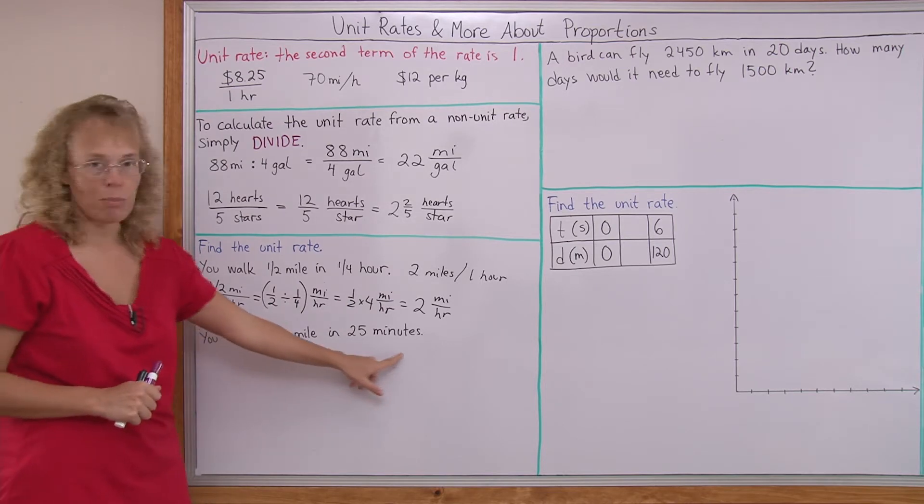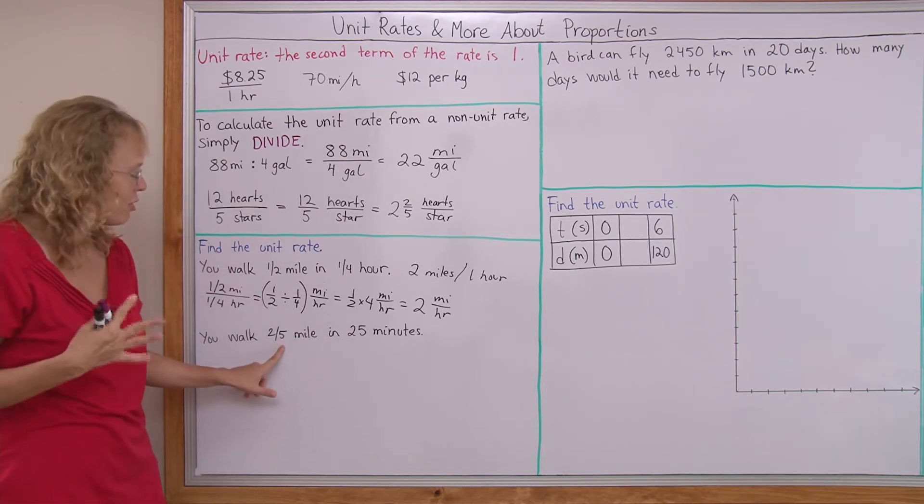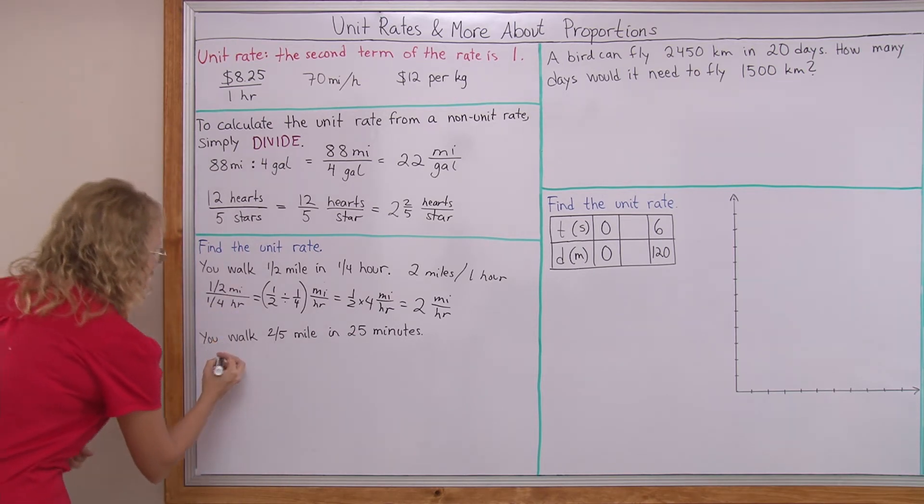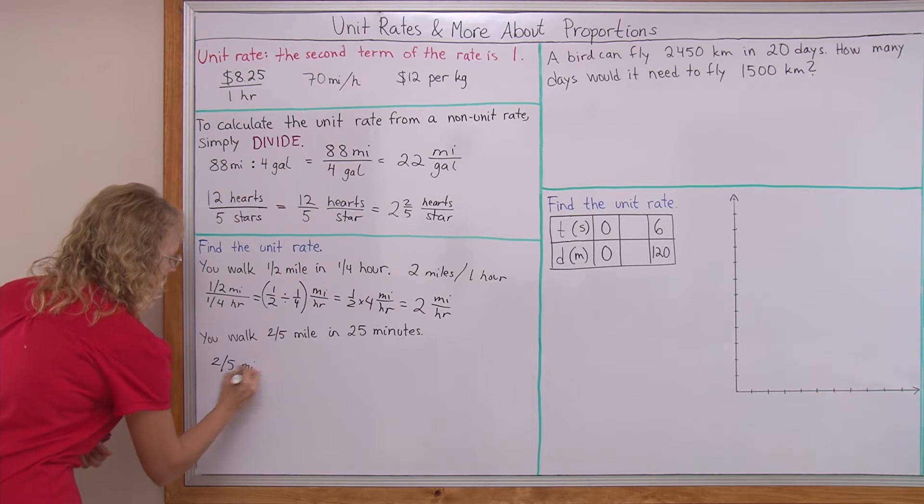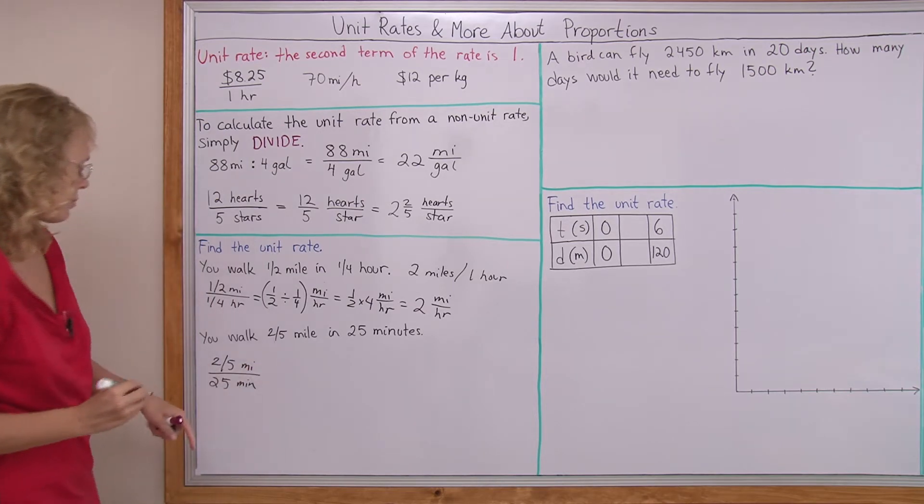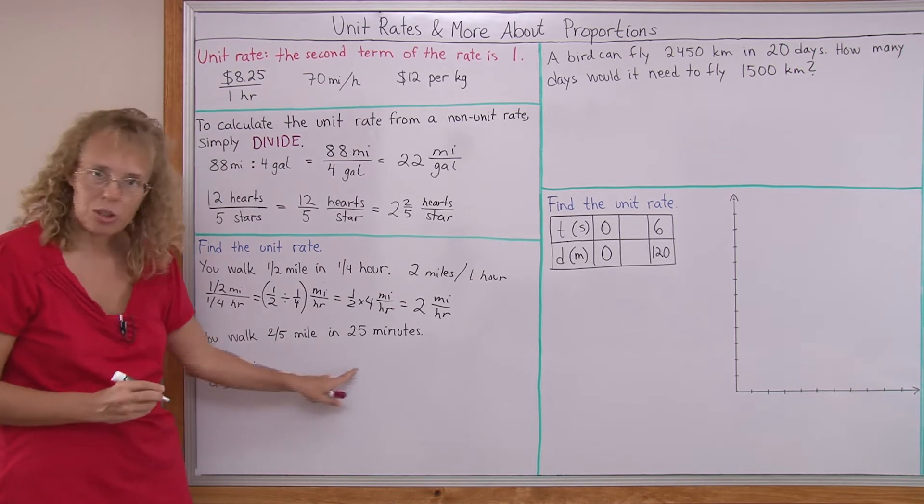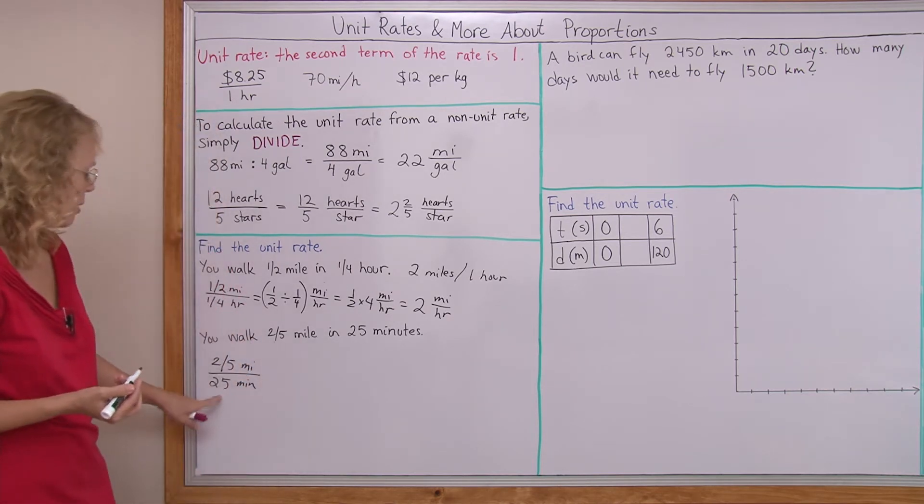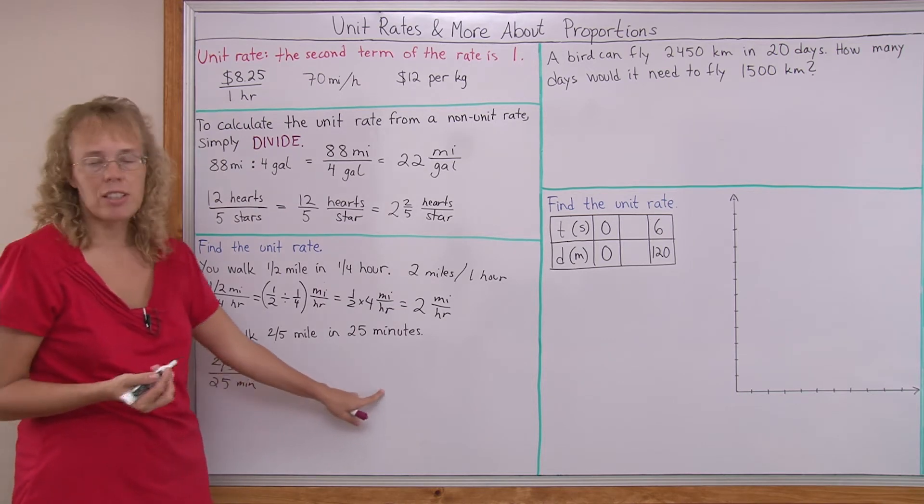Another one, we have a fractional part of an hour. You walk two-fifths of a mile in 25 minutes. Let me show you how to solve this one. Let's write the rate here. My goal is to get to so many miles per one hour, or 60 minutes.